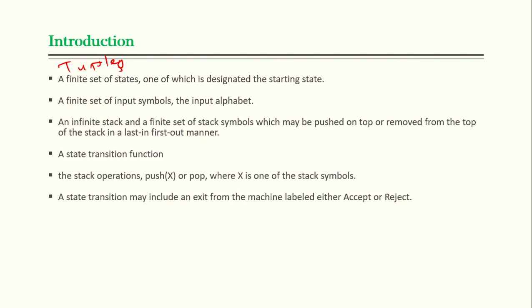The second tuple is a finite set of input symbols — the input alphabet — which is also the same as a finite state machine. The third tuple is a finite set of stack symbols which may be pushed on top of or removed from the top of the stack in a last-in-first-out manner. This is one key difference: in a finite state machine we don't have a stack, but in a pushdown machine we do, with push and pop operations.